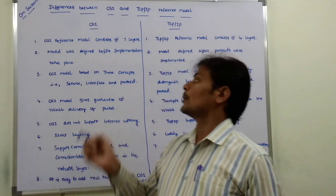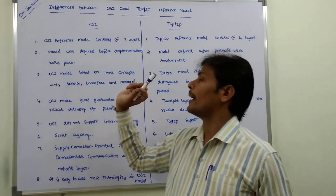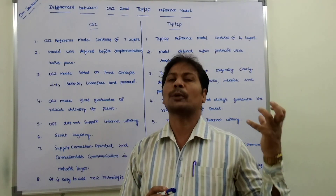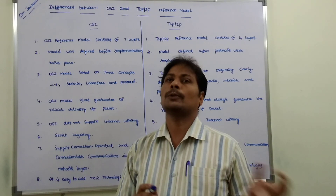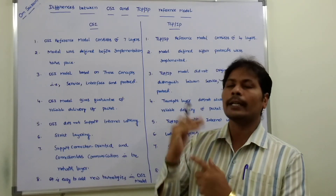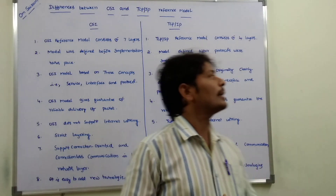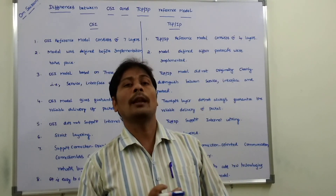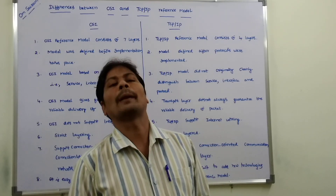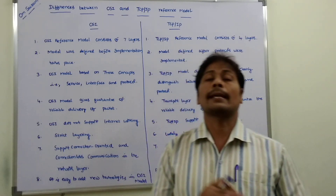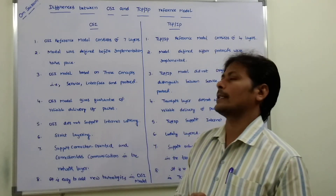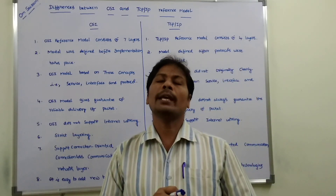Before developing any protocols, the OSI model was defined first; once the reference model was defined, the protocols were implemented after. But in the case of the TCP/IP reference model, first the reference model was defined, and after that the protocols were implemented. This is the second difference between the OSI reference model and the TCP/IP reference model.